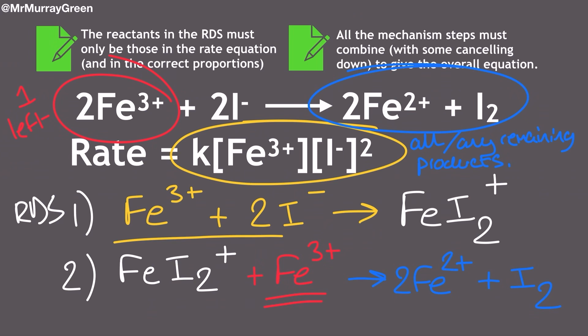If I was to do so with my two-step mechanism suggestion, you see I achieve exactly that. On my left-hand side, I've got the two iron-3s and the iodide, and then on the right-hand side, I've got the two iron-2s and the iodine, because the FeI2+ are going to cancel down because they're the same on either side of the arrows. It's perfect.